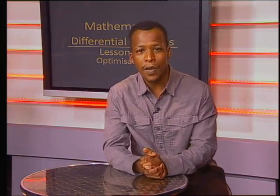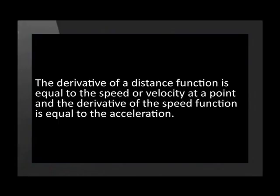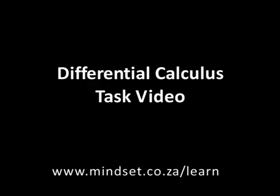We have now dealt with the application of calculus by determining the maximum surface area of a prism and doing questions involving calculus in motion. It is important to know all total surface area, perimeter, and volume formulae of prisms, pyramids, and spheres. In motion questions, the derivative of a distance function equals the speed or velocity at a point, and the derivative of the speed function equals the acceleration. Thank you for joining us. Remember to try the task video at the end of this series and visit www.mindset.co.za/learn for more resources. Goodbye.